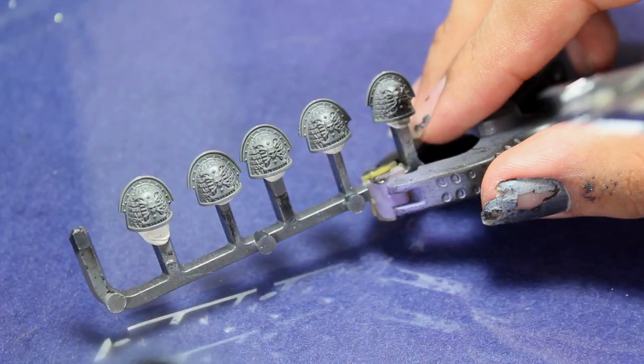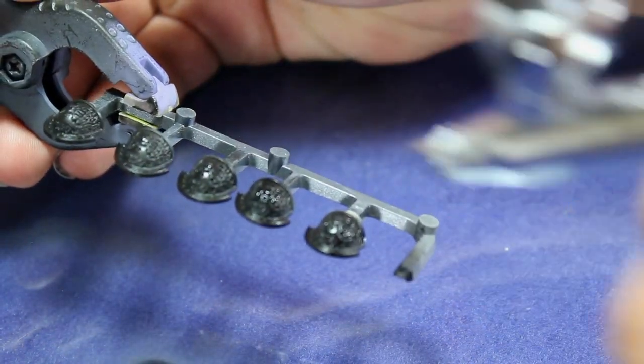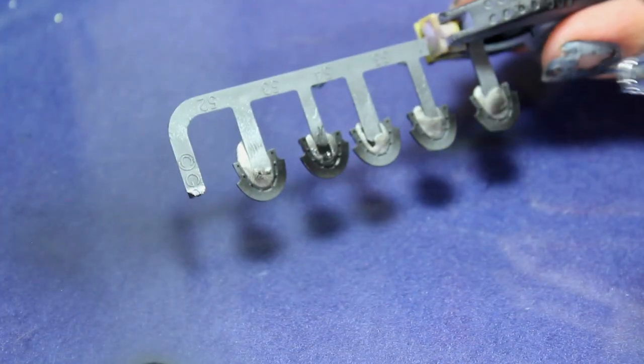I started out by priming the models with Vallejo black paint. I find that black paint is a really good color to start out with if you're going to be painting with metals.